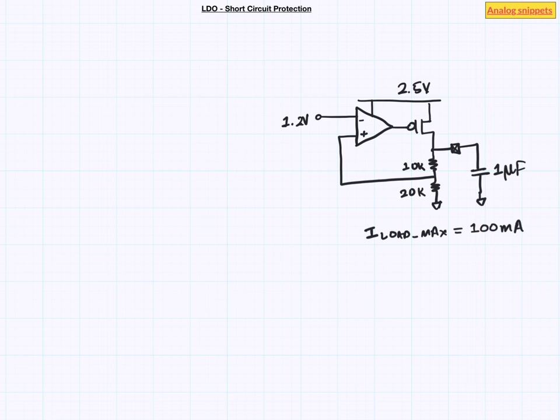Let's say we are designing a 1.8V LDO with 1µF of off-chip capacitor, 2.5V of input voltage and a maximum drive capability of 100mA. Now let's consider the startup of this LDO.